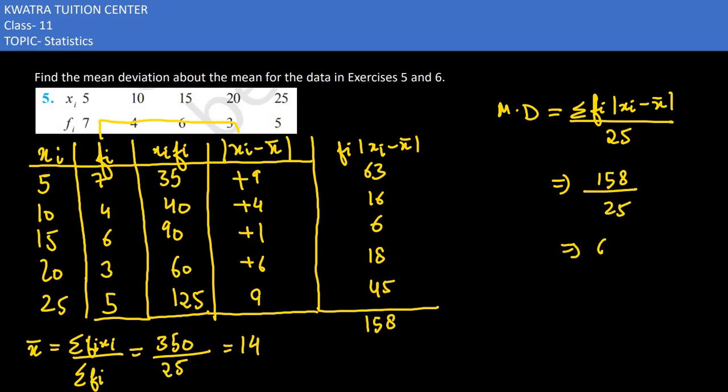So we get 158 over 25. If it is divisible, it will result into 6.32 mean deviation, which would be the answer for the 5th part.